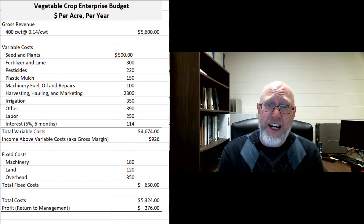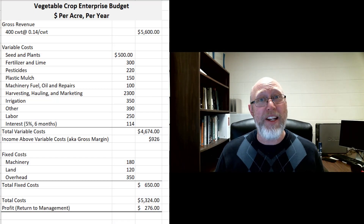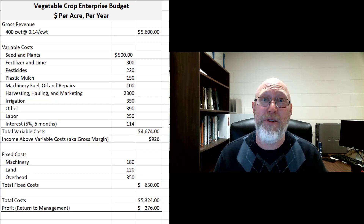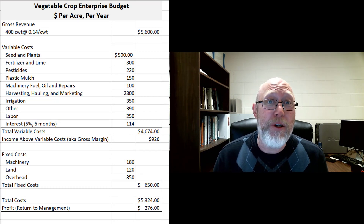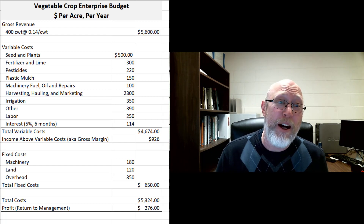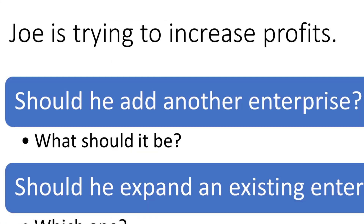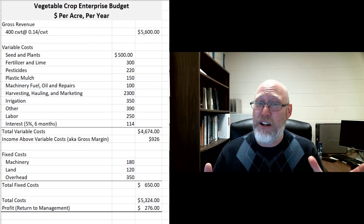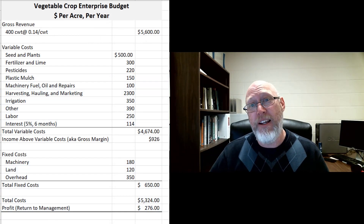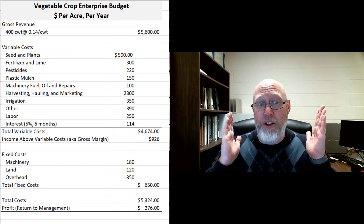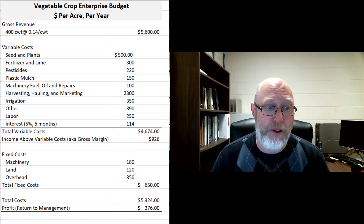The reason why you do an enterprise budget is simple. Businesses are designed to operate in order to make money. That's not a greed thing — you just need money to survive. The wise thing to do is to always be examining your business to figure out how you might be able to improve your profits. Should you add another enterprise? If you have an idea for an enterprise you might want to try, like a vegetable crop, you make an enterprise budget for that.